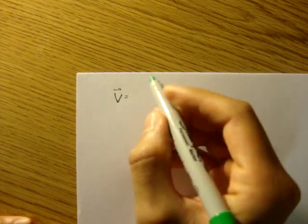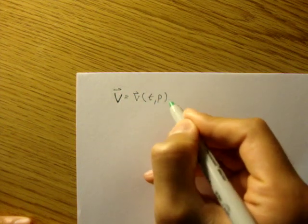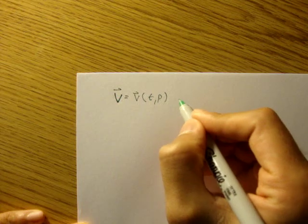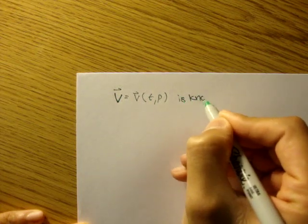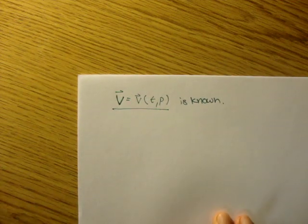Let's assume the velocity at a certain time, at a certain position, is known. We know the velocity field, okay?